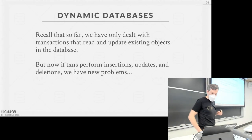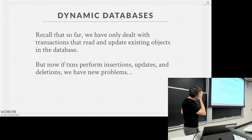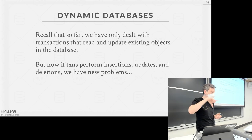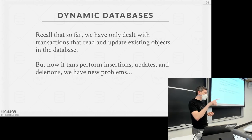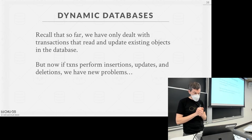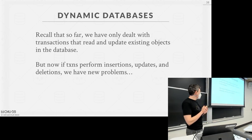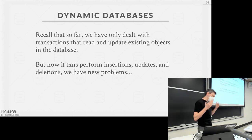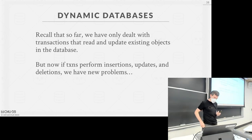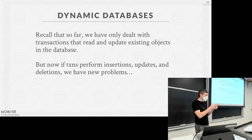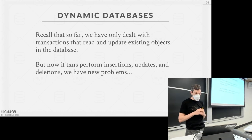Last class we rushed at the end and didn't get to this last piece. I want to get through how to deal with phantoms and isolation levels, and then jump into MVCC — multi-version concurrency control. Recall that all the examples when we talked about 2PL, OCC, and basic timestamp ordering were assuming the database was fixed in size, meaning we were only doing reads and updates, not inserts or deletes.